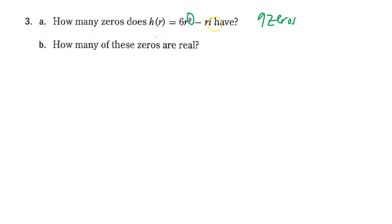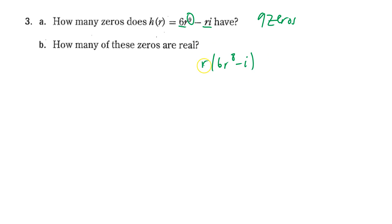A lot of those will be complex because there's an i involved, so not very many real zeros. Notice that this polynomial shares r in common, so I can pull an r out: r times (6r to the eighth minus i). Since r is a factor and so is 6r⁸ minus i, if r is a factor then r equals zero is for sure a zero.